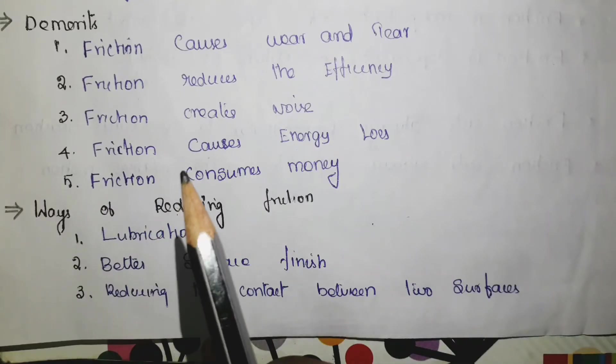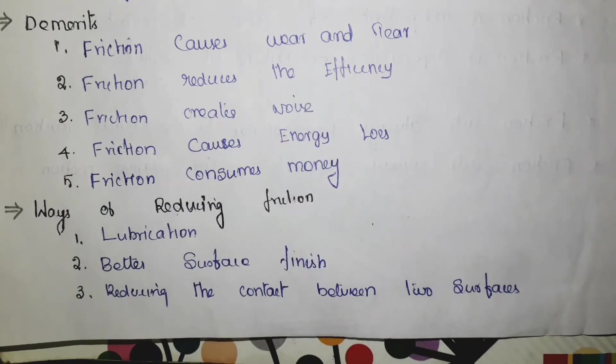The next one is demerits. It has many demerits. First one is it causes wear and tear. Wear and tear are one of the disadvantages, and friction plays a major role in it. Then second one is it reduces the efficiency. Efficiency is nothing but output by input, and it will be reduced when you have friction. Then it creates noise. Friction plays an important role in creating noise in the parts. Then it creates energy loss. When you have constant output, we have to increase the input, so there it creates some energy loss. Then it consumes money ultimately.